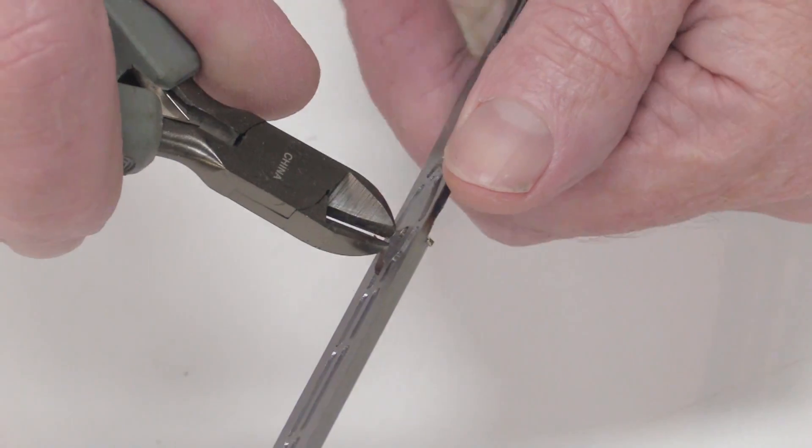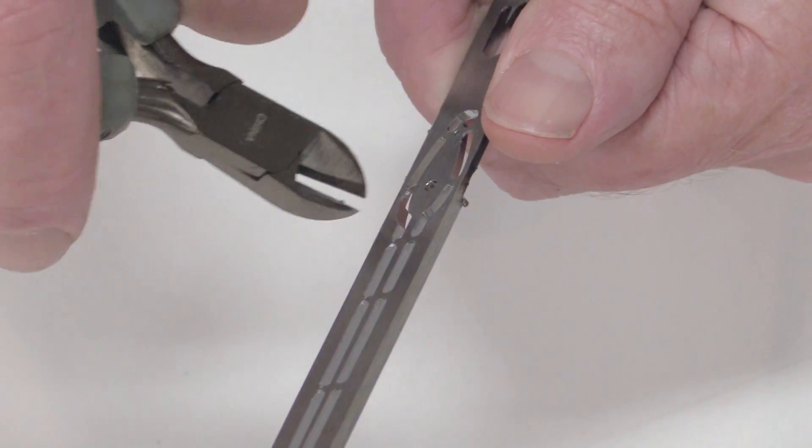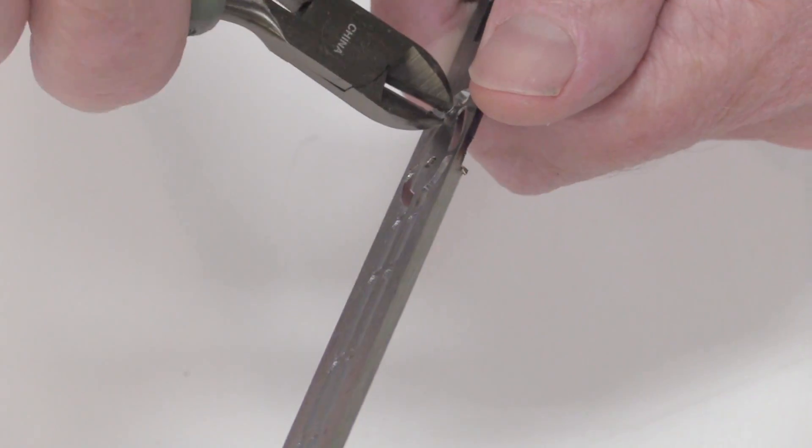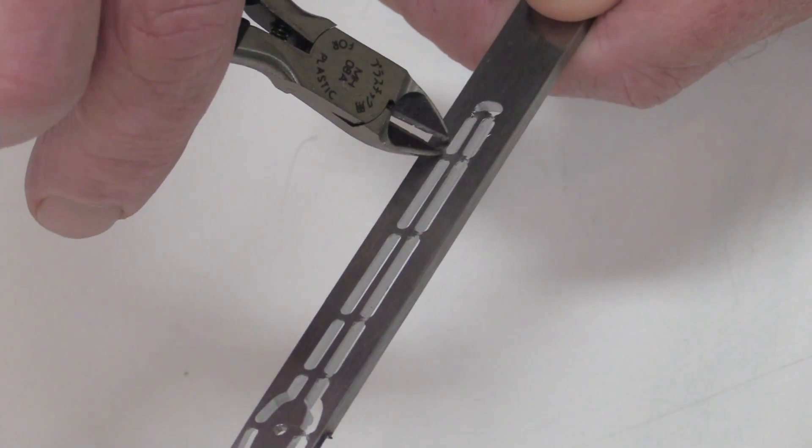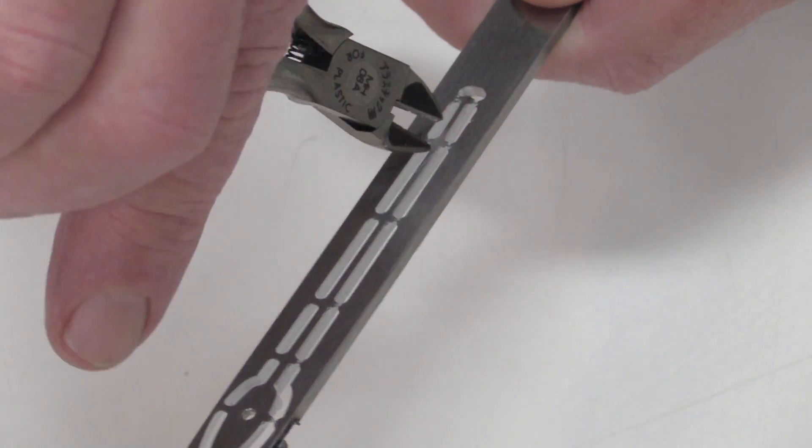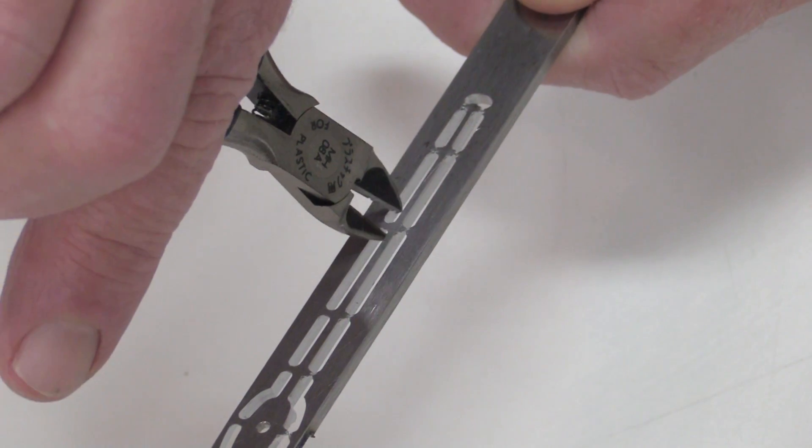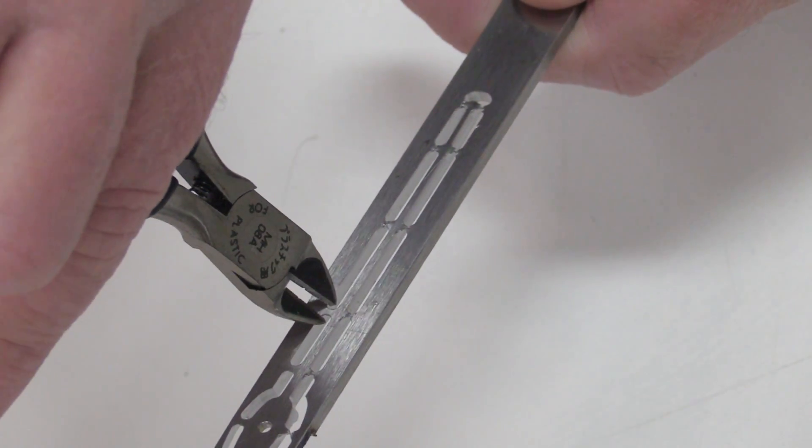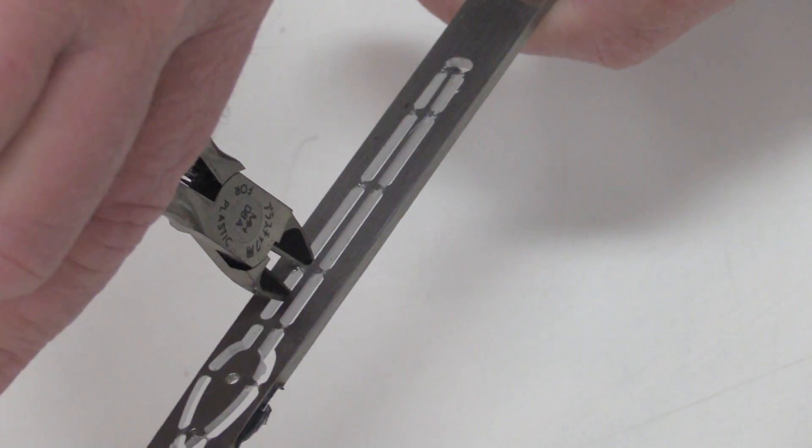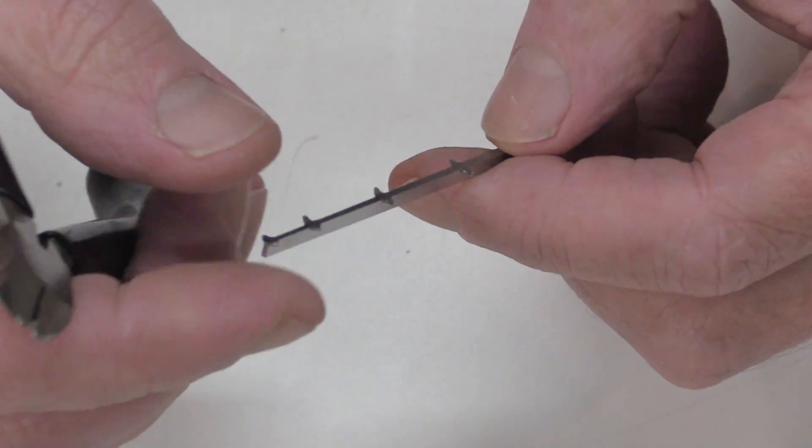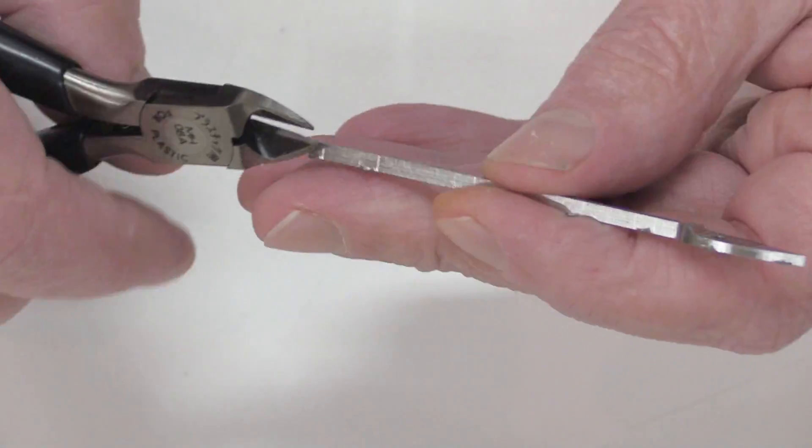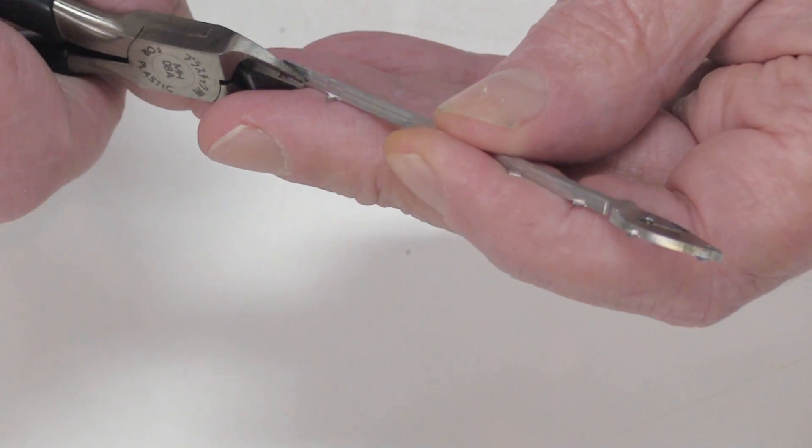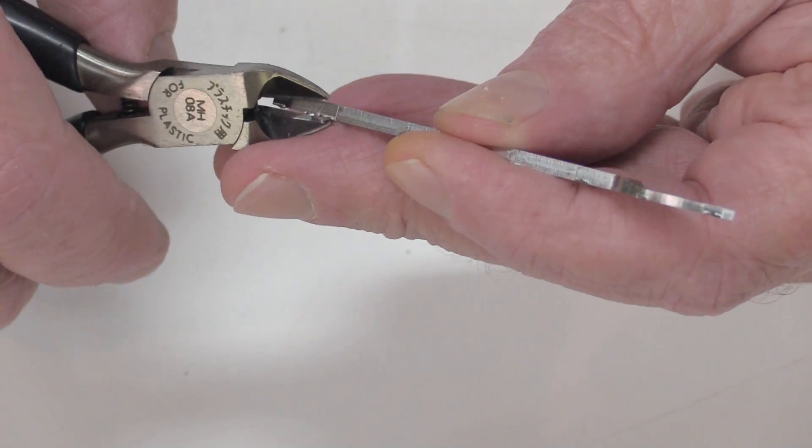Once the parts are cut out, they need to be removed from the waste stock. I find it best to trim the tabs close to the waste stock and leave them connected to the part. Once that's done, you can flip the cutters around to the straight edge portion and trim them as close to the part as possible.